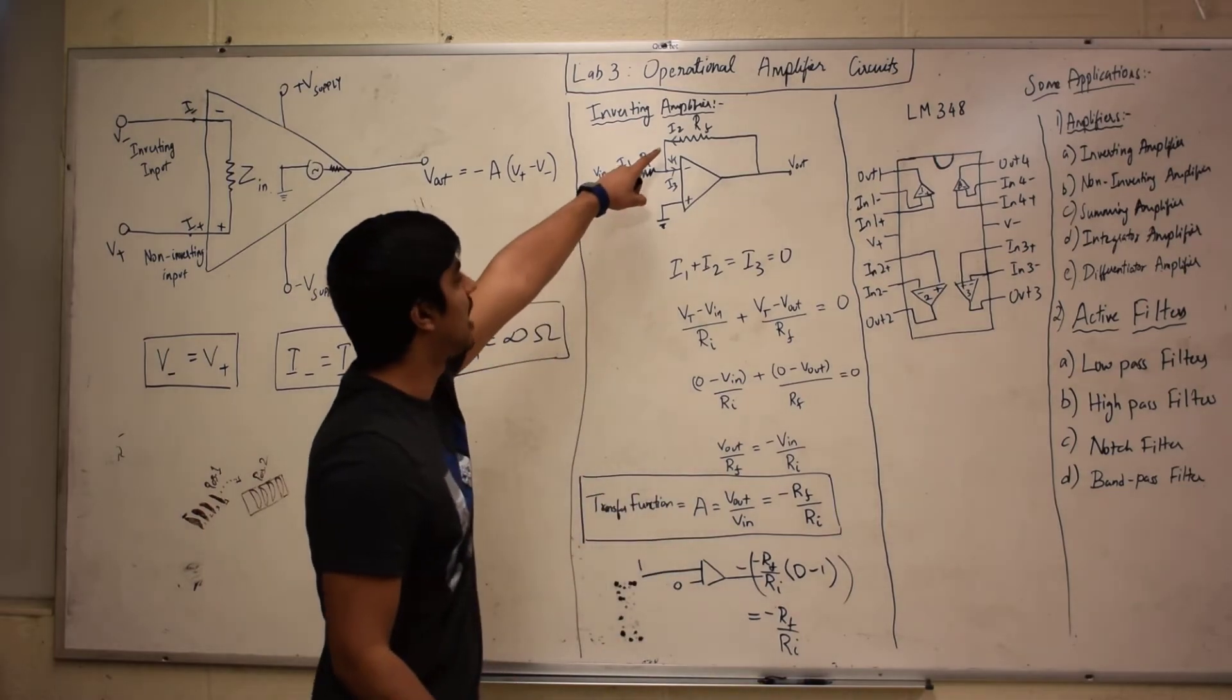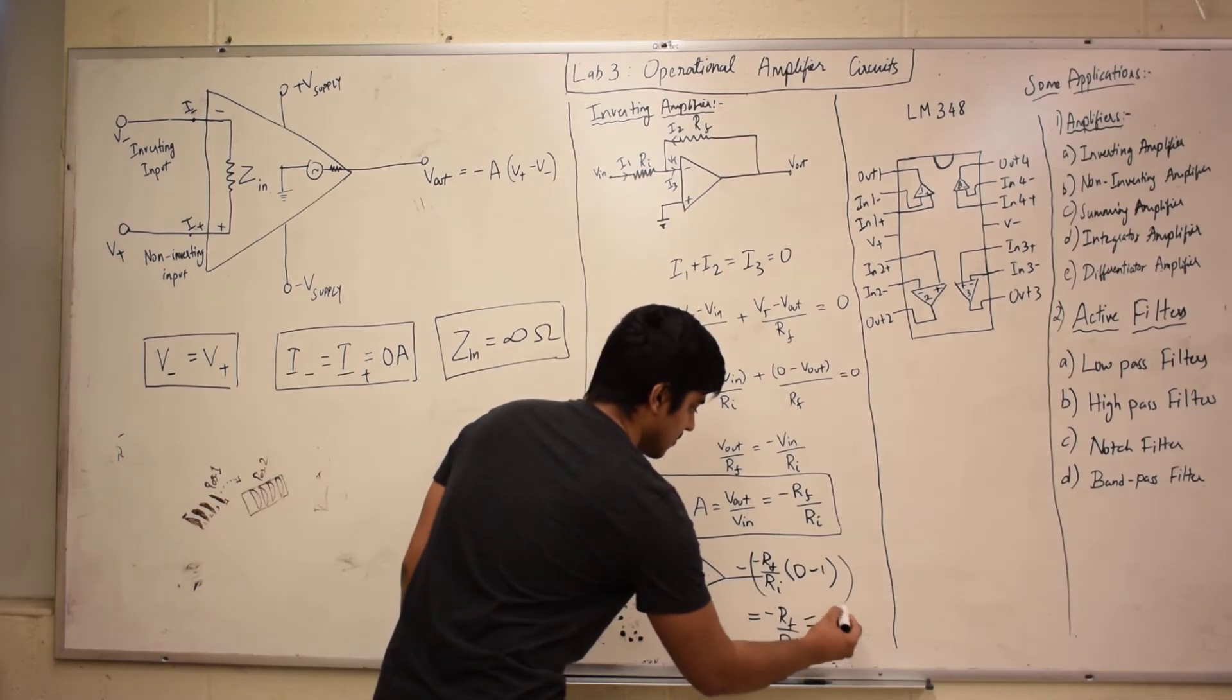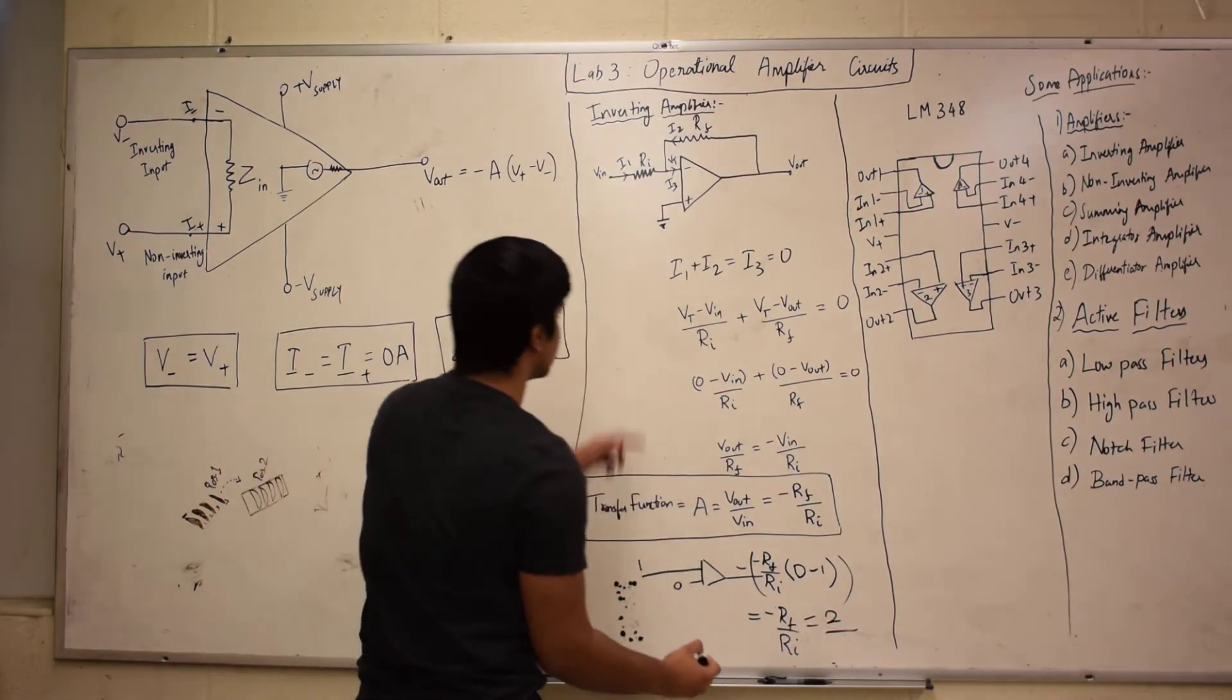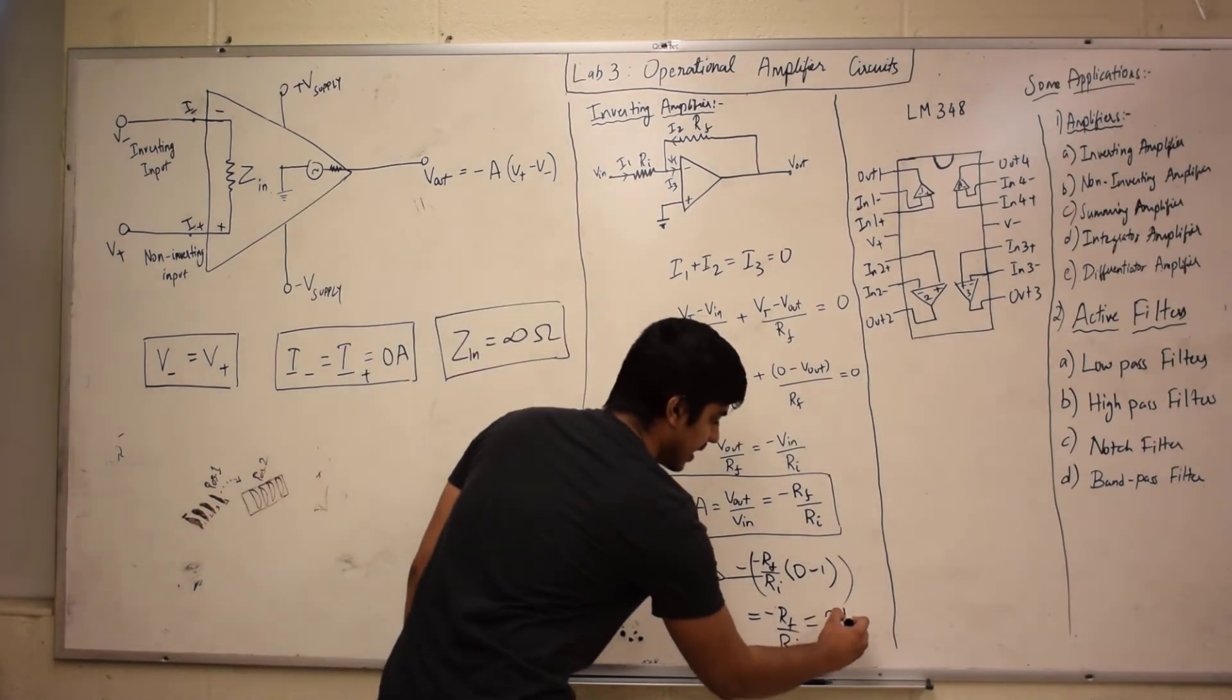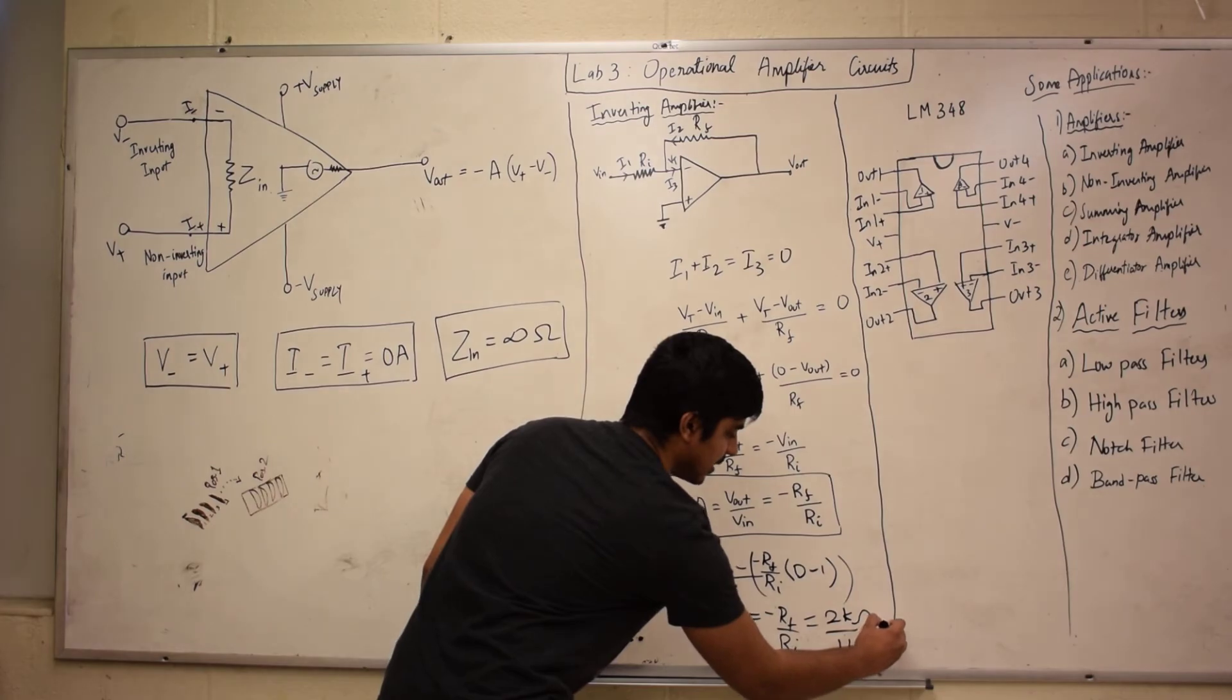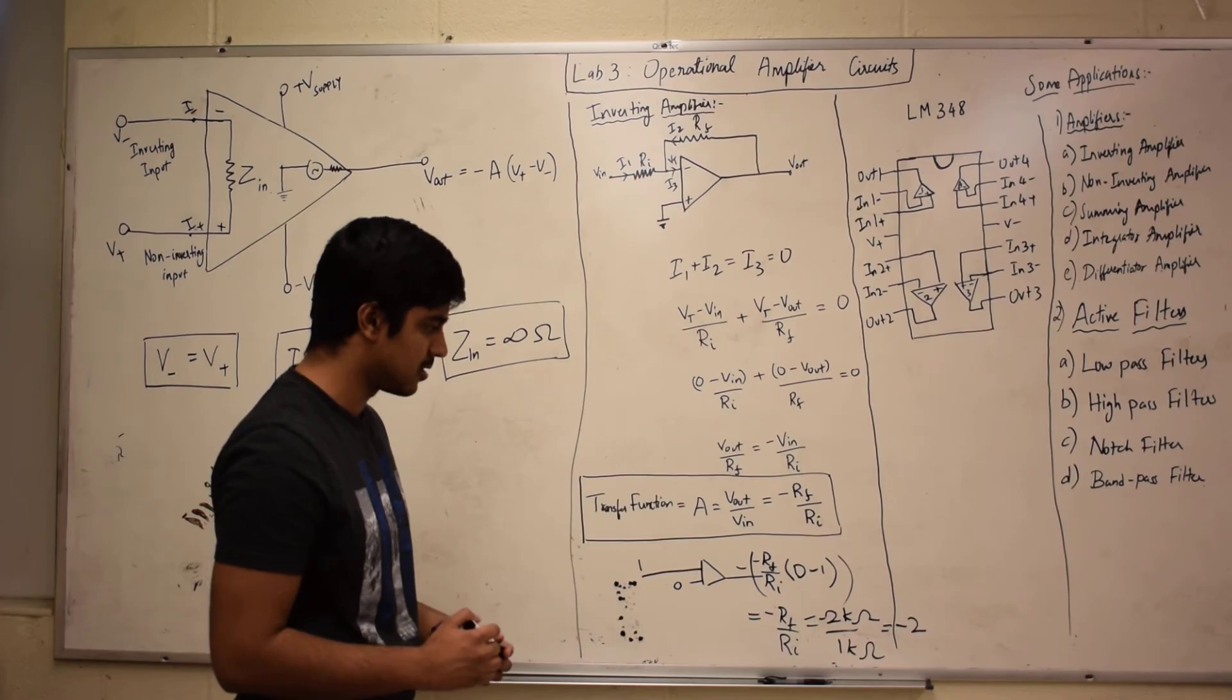If we take RF as two kilohms and RI as one kilohm, your output would be minus two. So your gain would be minus two.